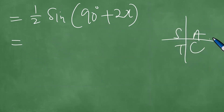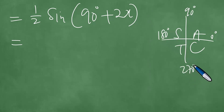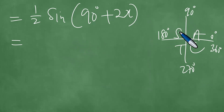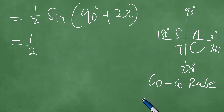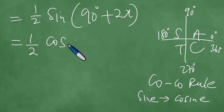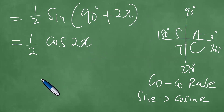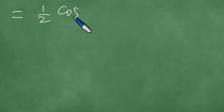Using the CAST diagram — 0 degrees, 90 degrees, 180 degrees, 270 degrees, 360 degrees — the angle 90 degrees plus 2x is in the second quadrant, in which the sine is positive. By what we call the COCO rule, the trigonometric sine changes to the trigonometric cosine function, so it becomes the cosine of 2x. We therefore have with us one half cosine 2x.